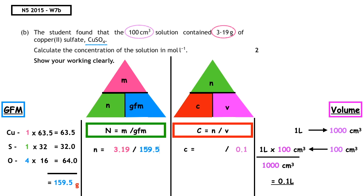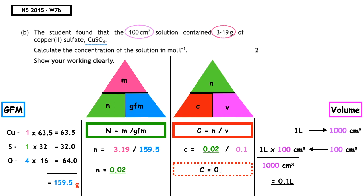So number of moles equals 3.19 divided by 159.5, which gives us 0.02 moles. Substituting into our final calculation: concentration equals 0.02 divided by 0.1, which gives a concentration of 0.2 moles per liter.